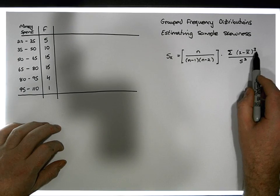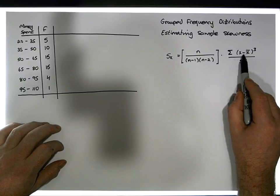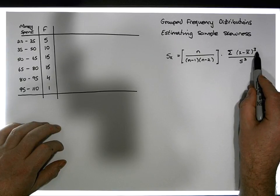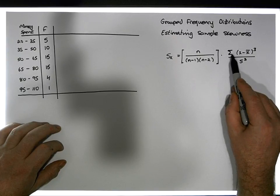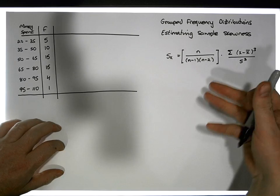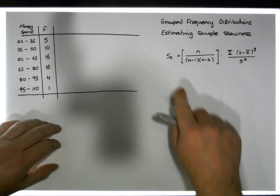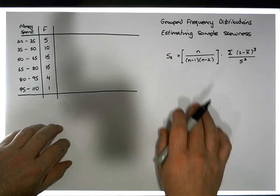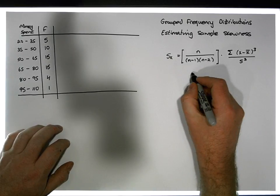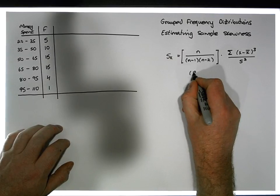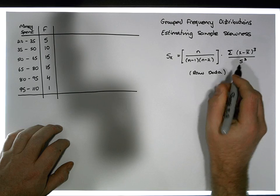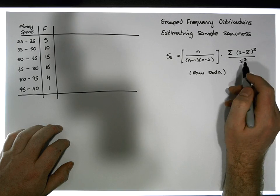Skewness of a distribution is known as the third moment. You can see in this formula that instead of sums of squares, we're calculating sums of cubes — the differences between observations and the mean, cubed. This formula applies when we have raw data with all individual observations available.